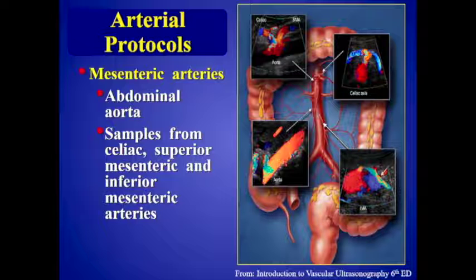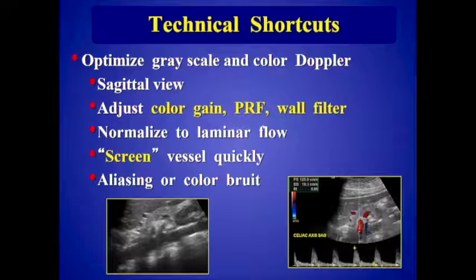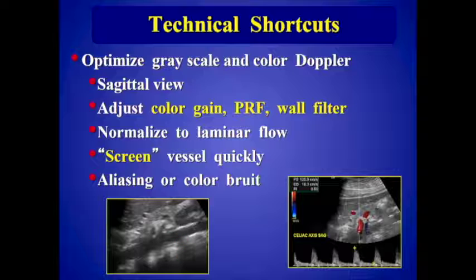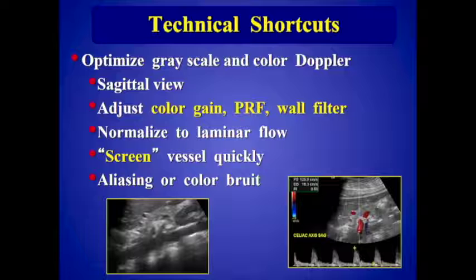As part of our protocol, we start with an evaluation of the abdominal aorta, looking for aneurysm and plaque stenosis, then take samples from the celiac, superior mesenteric, and inferior mesenteric arteries. We want to optimize both the grayscale and the color Doppler, looking for evidence of plaque on a sagittal view. We turn the color on to look for vessel patency and evidence of stenosis or thrombosis. We adjust the color gain, pulse repetition frequency, and wall filter to normalize to laminar flow — in a normal vessel we see a nice, homogeneous color flow pattern with no disturbed flow or aliasing.